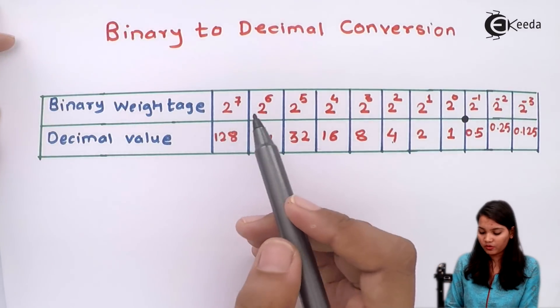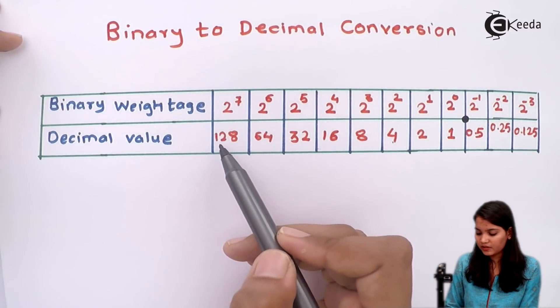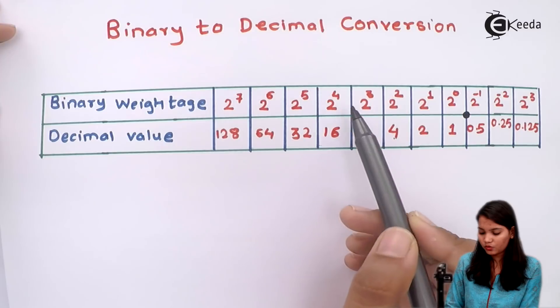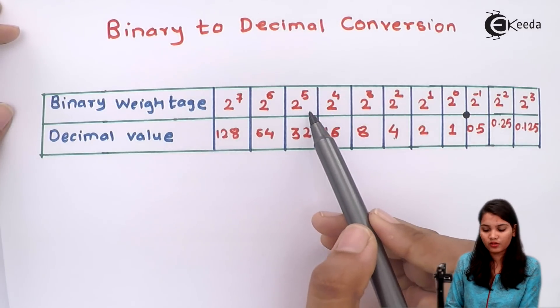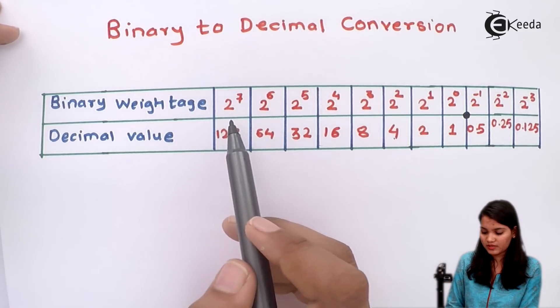And up to 2 raised to 7, which is 128. So the weightages go: 2 raised to 3, 2 raised to 4, 2 raised to 5, 2 raised to 6, and up to 2 raised to 7.